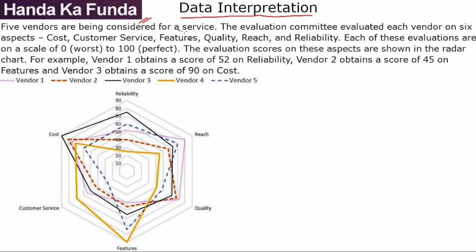Five vendors are being considered for a service. The evaluation committee evaluated each vendor on six aspects: cost, customer service, features, quality, reach, and reliability. Each of these evaluations are done on a scale of 0 to 100, where 0 is the worst and 100 is perfect. The evaluation scores on these aspects are shown on the radar chart.